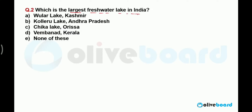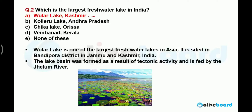Which is the largest fresh water lake in India — the sweet water lake? The correct answer is Wular Lake. It is situated in Jammu and Kashmir. Wular Lake is one of the largest freshwater lakes in Asia, situated in Bandipura district of Jammu and Kashmir. The lake basin is formed as a result of tectonic activity and is fed by the Jhelum River.